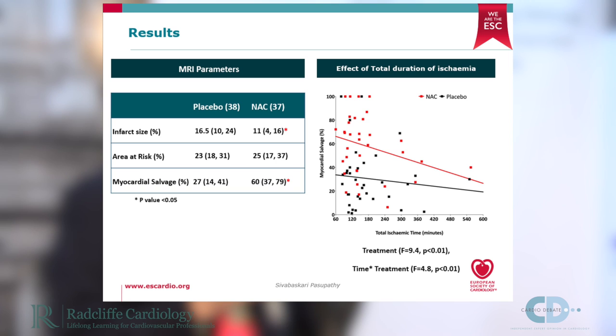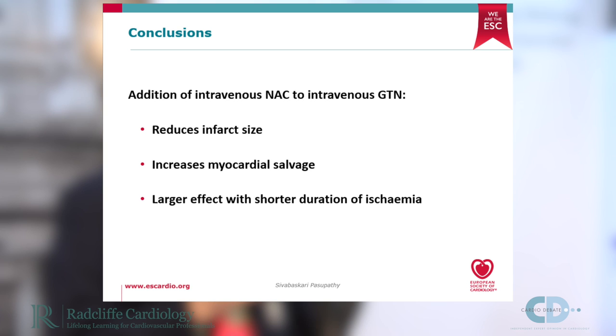The plot showing myocardial salvage over ischemic time demonstrates that a shorter ischemic time results in a greater beneficial effect of N-acetylcysteine. In summary, the addition of intravenous N-acetylcysteine to low-dose intravenous GTN reduces infarct size, increases myocardial salvage, with a larger effect at shorter ischemic durations. A 5.5% reduction in infarct size could potentially translate into a 20% reduction in mortality based on previous studies. The next step is to undertake a study examining clinical endpoints rather than the surrogate endpoint of myocardial infarct size.